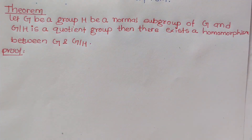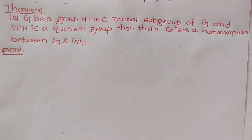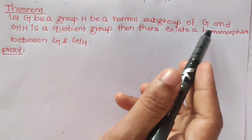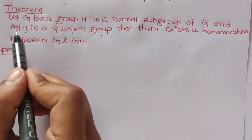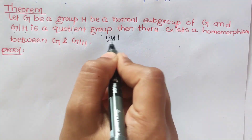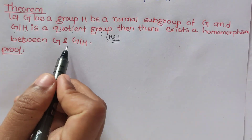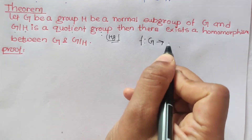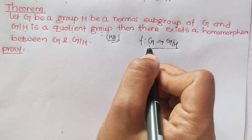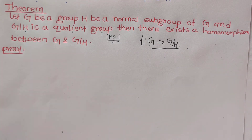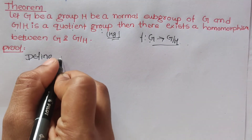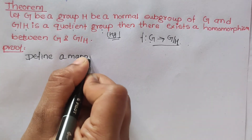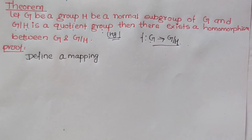So the definition of natural homomorphism states: let G be a group and H a normal subgroup of G. Then G by H is a quotient group — that is, the set of all right cosets of H in G, in the form Hg. Then there exists a homomorphism between G and G by H. Let's see the proof.